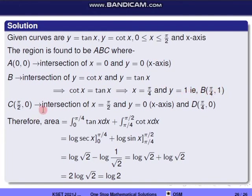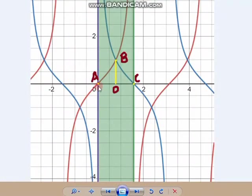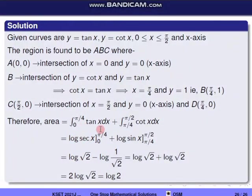Point D is (π/4, 0), the midpoint of A and C on the x-axis. The area A = integral from 0 to π/4 of tan x dx + integral from π/4 to π/2 of cot x dx.